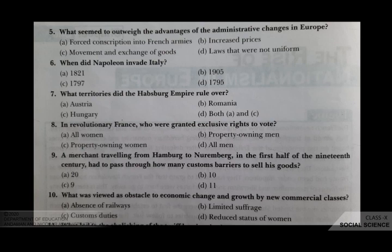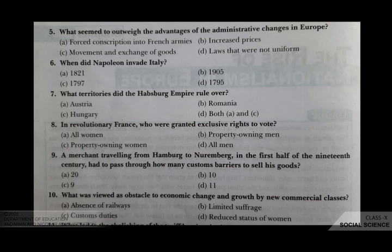Let us see the next question: what territories did the Habsburg Empire rule over? Your options are A Austria, B Romania, C Hungary, D both A and C. The correct answer is D, both A and C — that is Austria and Hungary.